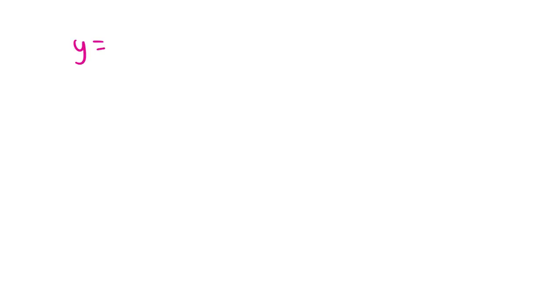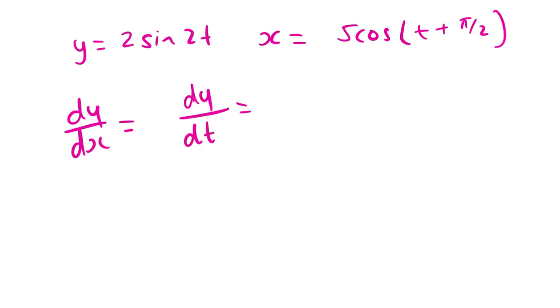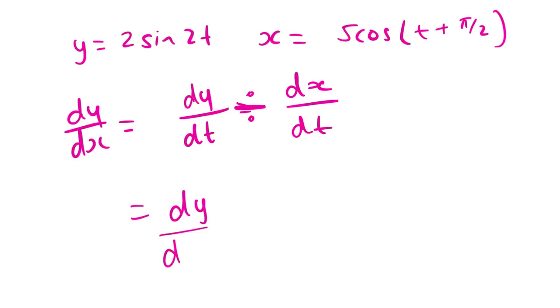Next up, chapter five: differentiation. We've technically got two rules. First, parametric differentiation — if we have y in terms of t and x in terms of t, and we need to differentiate, to find dy/dx we do dy/dt divided by dx/dt. We differentiate y with respect to t and divide by the differential of x with respect to t. Because the dt's cancel, we get the differential of y over the differential of x.